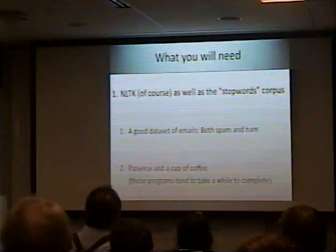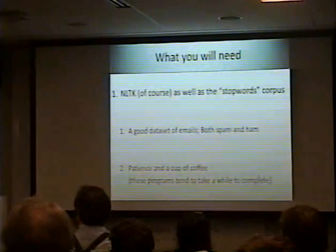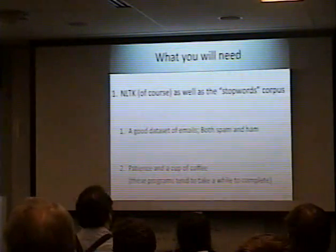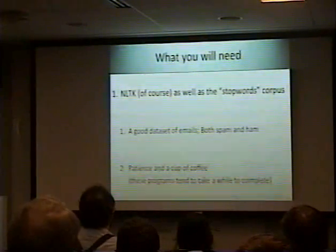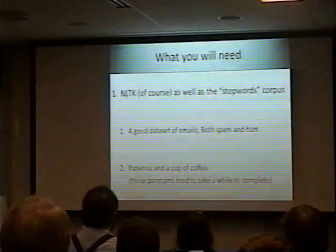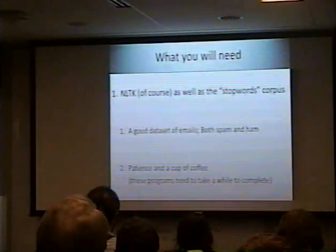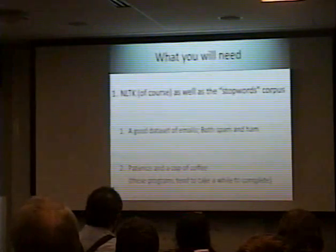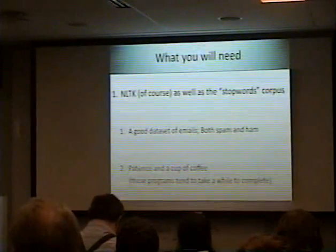After you train. After you train, right — 80/20. We're going to go through that later. What you're going to need for this is the stop words corpus, NLTK obviously, a good data set of emails — you need both spam and ham. You're also going to need patience. These programs, especially during the training process, tend to take a lot of time, especially if you have really large data sets.